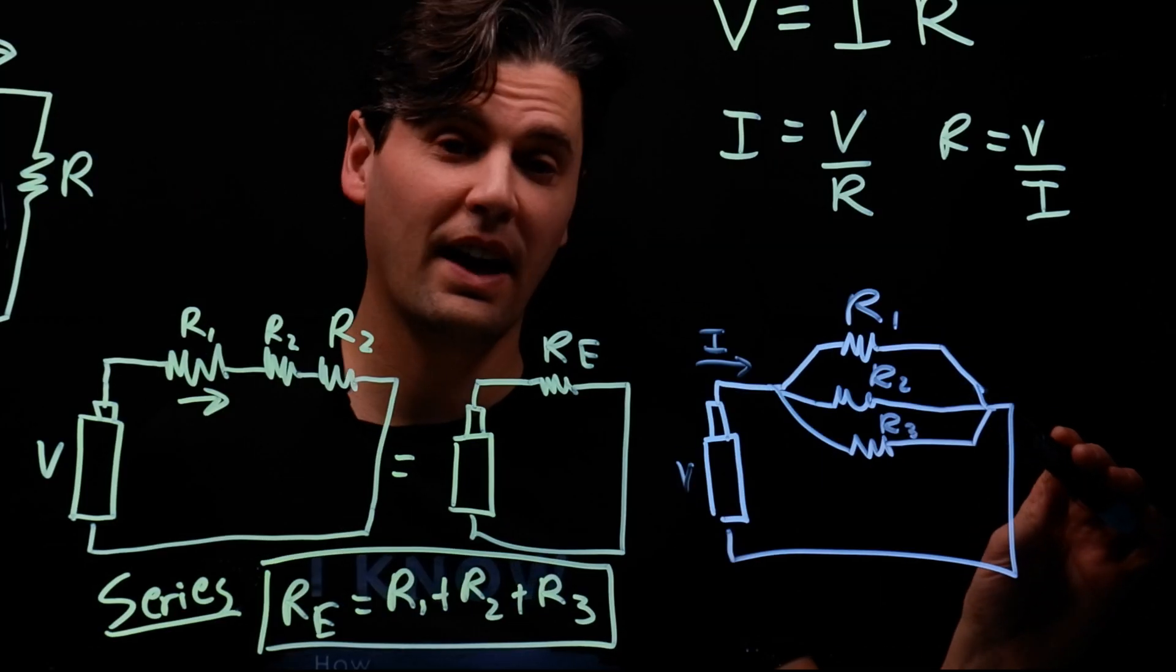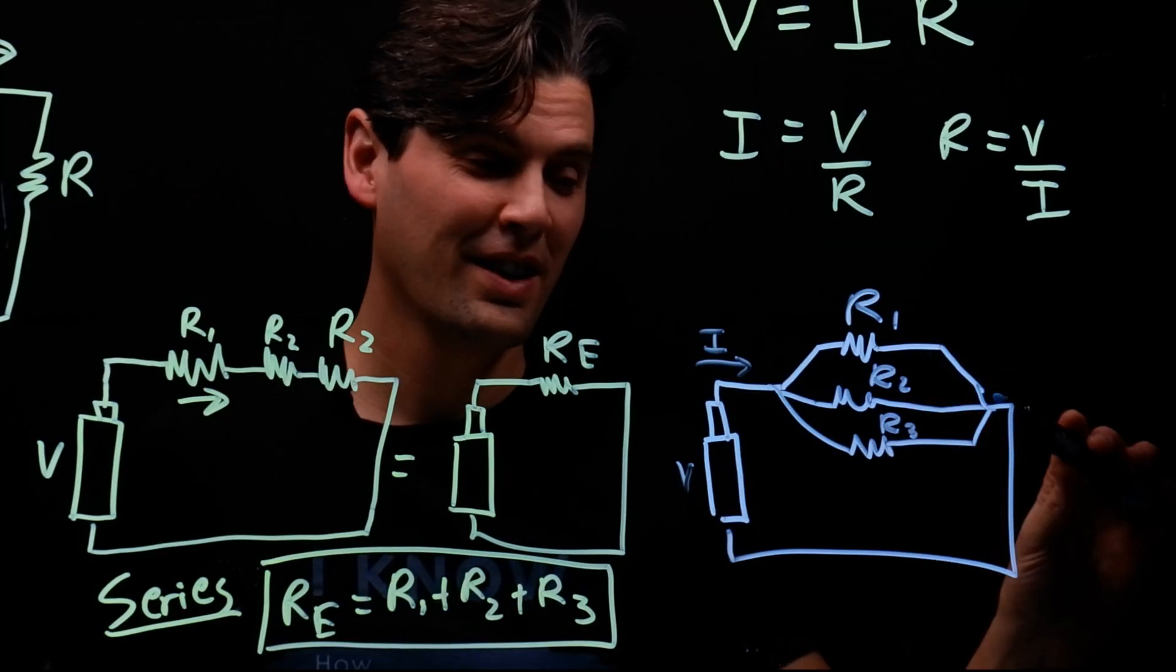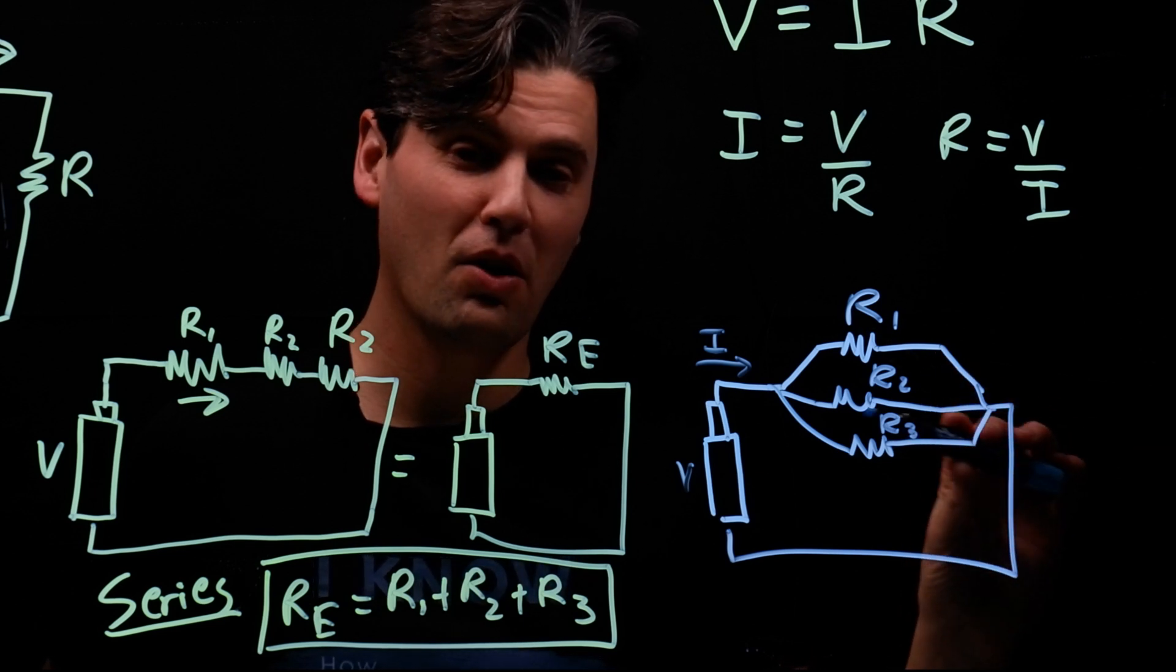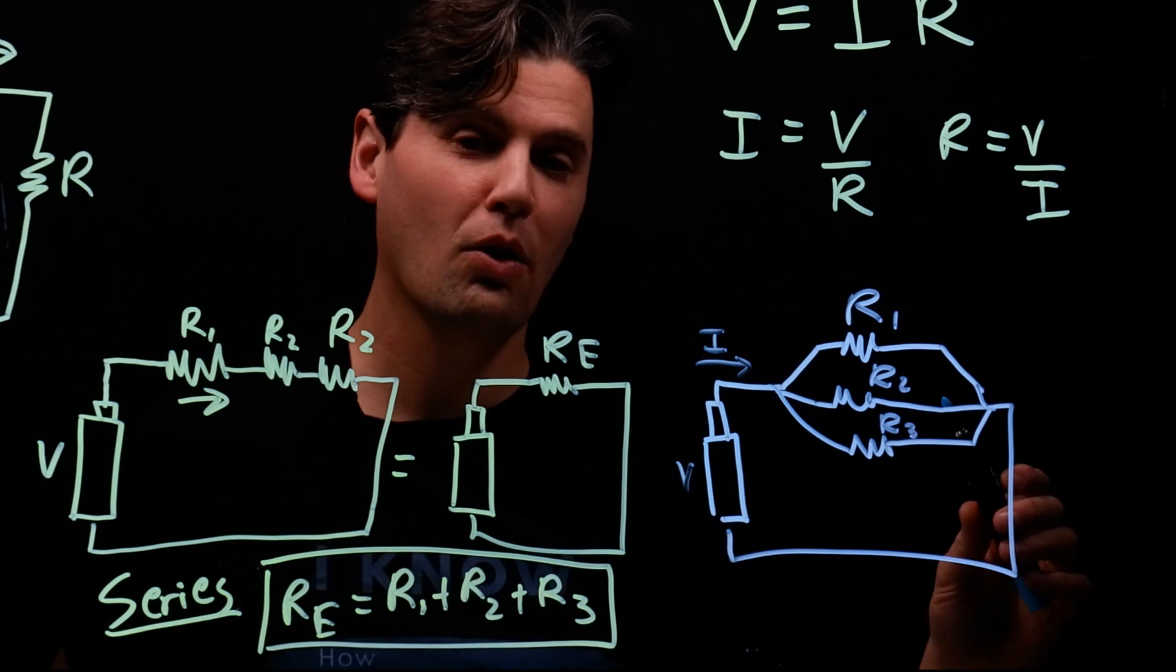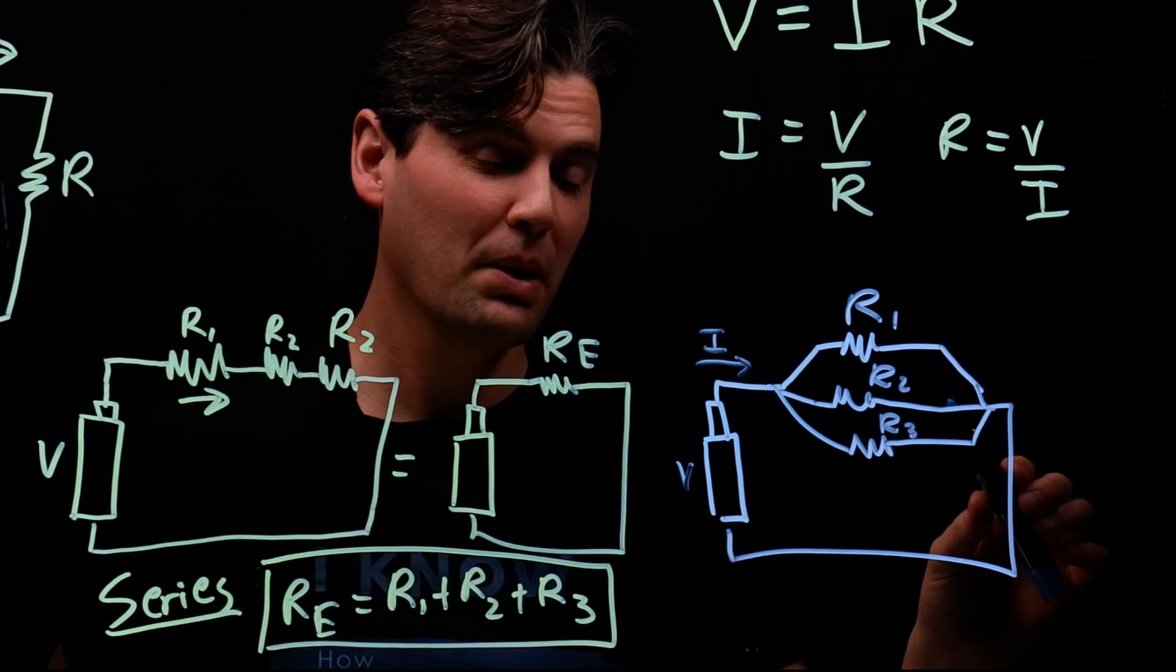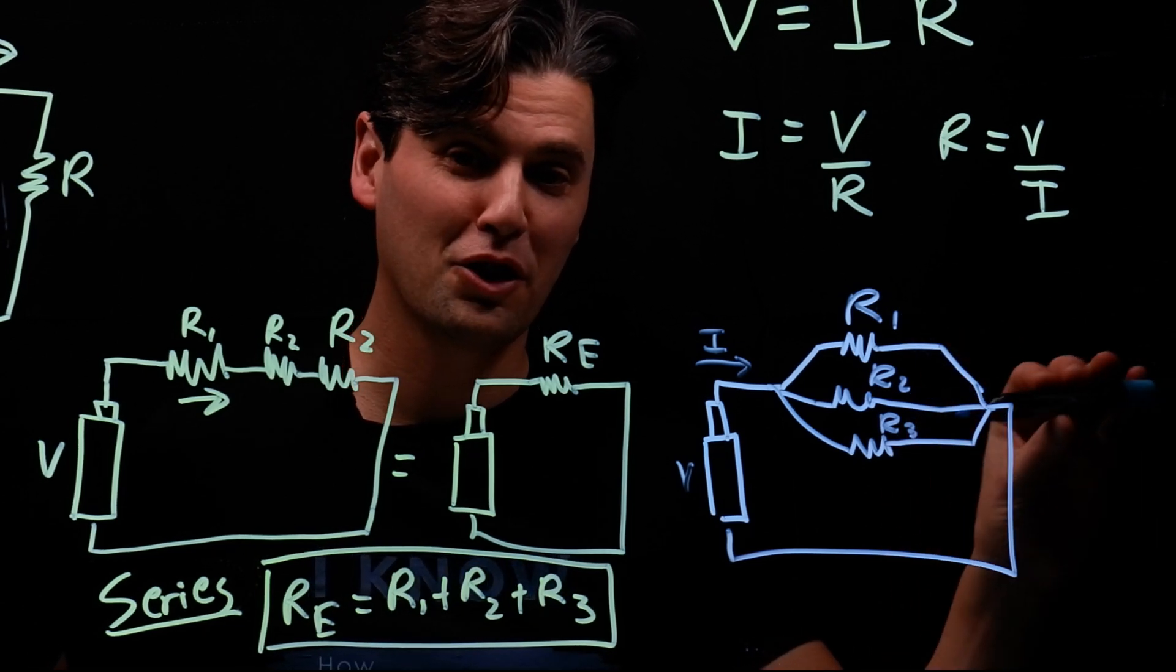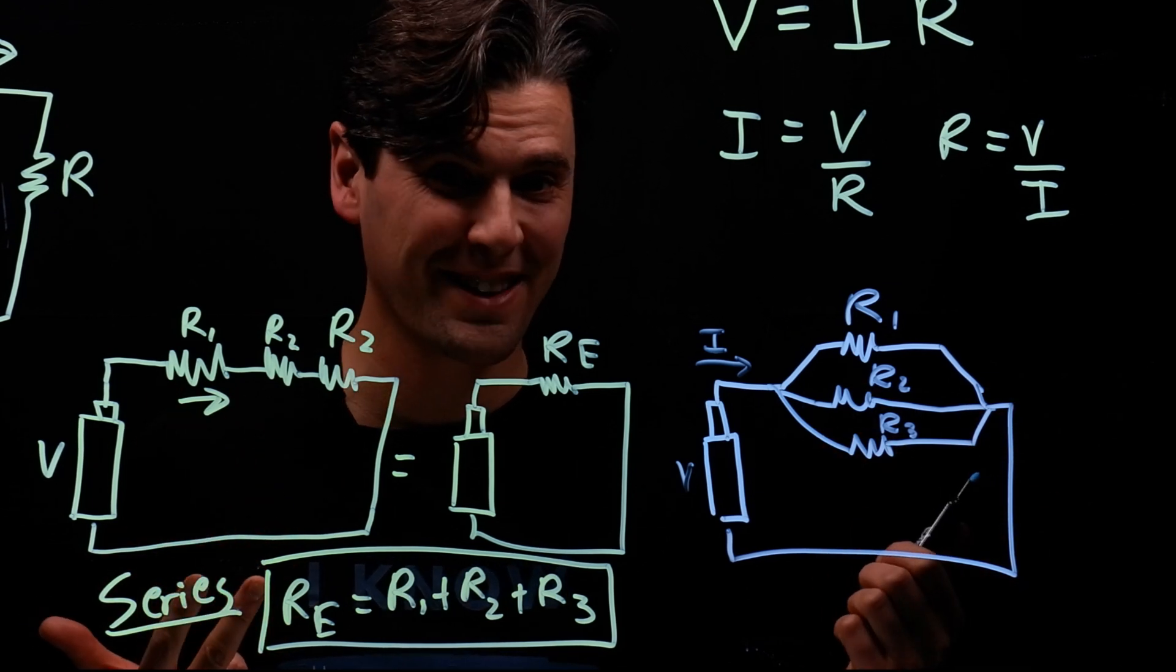So now when the electrons get here, they get to choose which route they want to go down. And there's going to be essentially a lower total resistance because they're going to be able to choose what we call the path of least resistance, right? You hear that phrase in general colloquial terms as well.